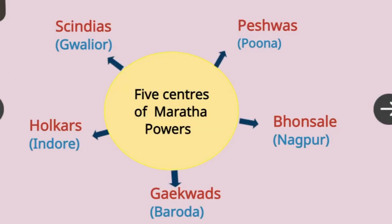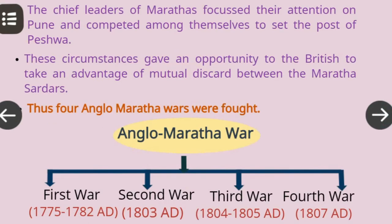The five centers of Maratha power were: the Peshwas, the head of the Marathas, based in Pune; the Bhosles in Nagpur; the Gaikwads in Baroda; the Holkars in Indore; and the Sindhias in Gwalior. The chief leaders of the Marathas focused their attention on Pune and competed among themselves to get the post of Peshwa. Such circumstances gave the British an opportunity to take advantage of the mutual discord between the Maratha sardars.